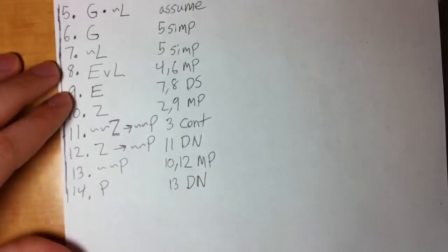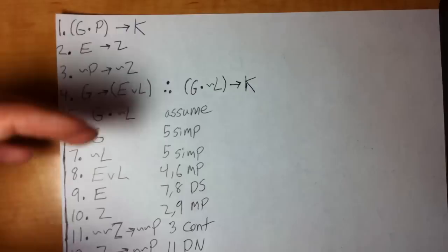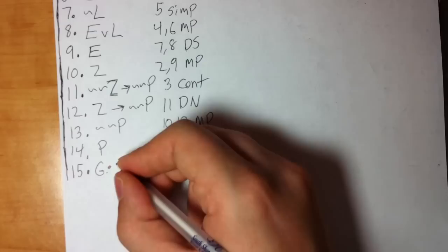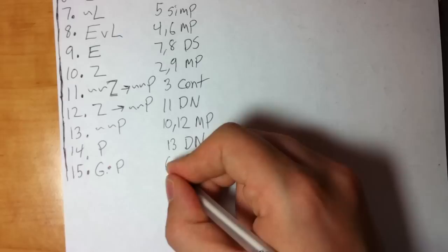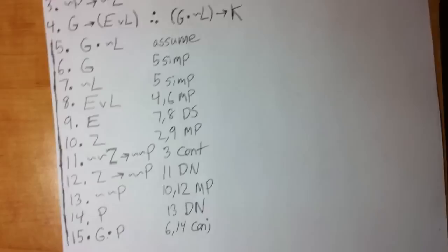Now I can turn tilde tilde P into P through line thirteen, DN. All this is an effort — remember, stay focused on step two: get the right side. I see K in line one, and if I can get the left side of line one I can use modus ponens. So all this has been to get K. I can now form the left side of line one by combining line six, where I have G, and line fourteen, where I have P — that's lines six and fourteen, conj.